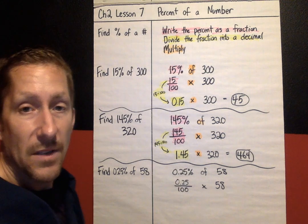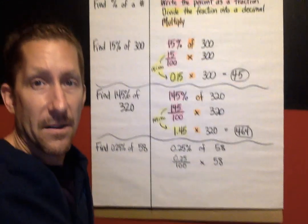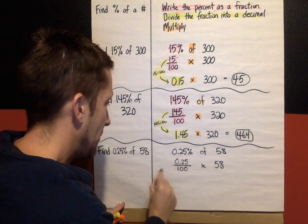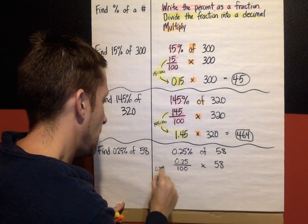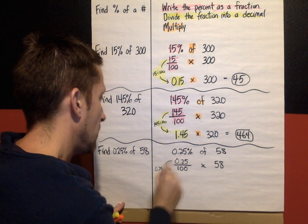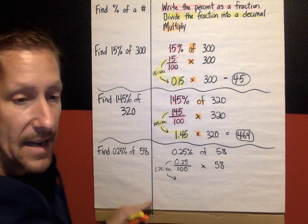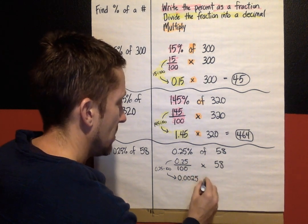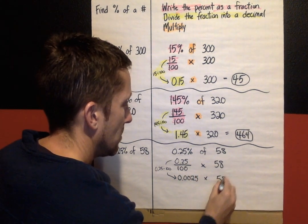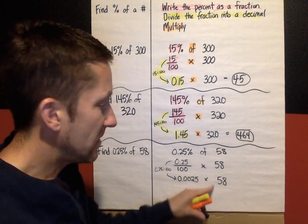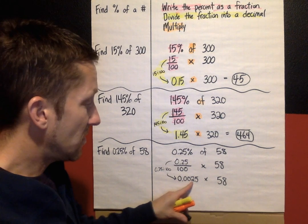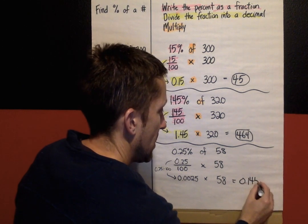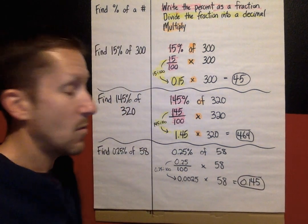So the process, as you can see, has not changed at all. I'm going to tip this down just a little bit. Divide this using your calculator. Divide the fraction into a decimal. So 0.25 divided by 100 is what I'm putting in my calculator. And then I get 0.0025 times 58. I can calculator this. 0.0025 times 58. And my answer is 0.145.